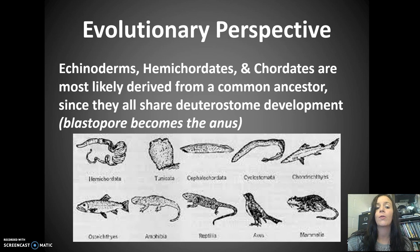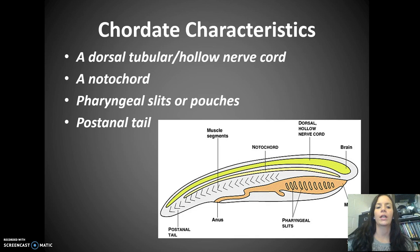Now there are some characteristics of chordates you need to be familiar with. There are four things that all chordates have in common: they have a dorsal tubular or hollow nerve cord, they have a notochord, pharyngeal slits or pouches, and a post-anal tail.